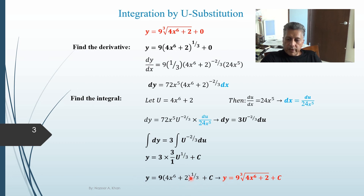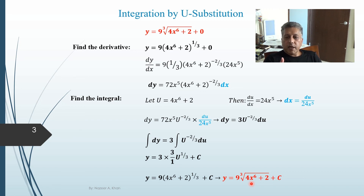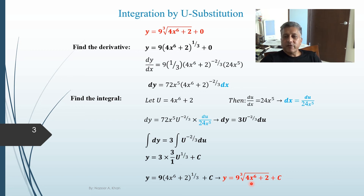Cleaning up: y equals nine times the cube root of the binomial (4x⁶ + 2) plus c. A fractional power of one third is the cube root, so I write it in that general form. And that's the full U-substitution procedure for this example. I hope this video helps you understand the U-substitution method and that you score well on whatever evaluation you're doing. Thank you, bye bye.